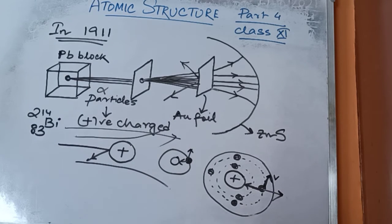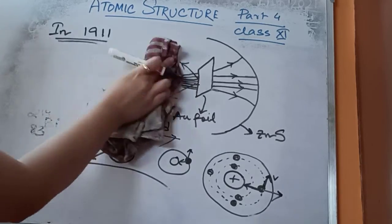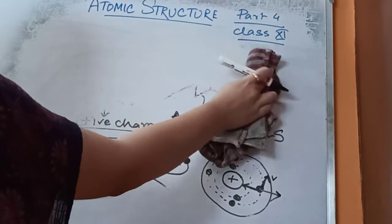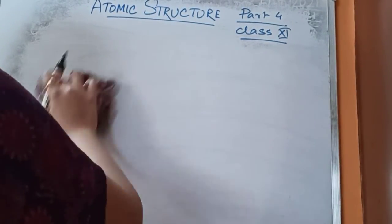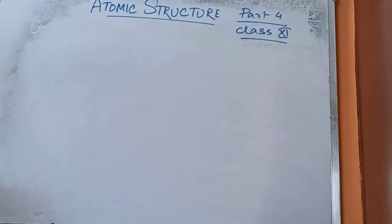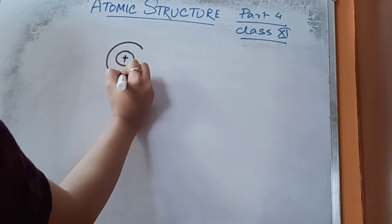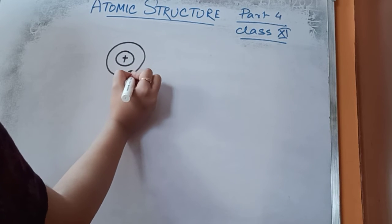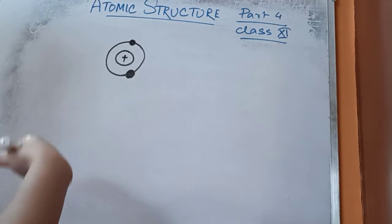This was Rutherford's atomic model — a nucleus at the center with electrons moving in fixed orbits around it. However, Rutherford's atomic model has certain strong limitations. A body in circular motion is continuously gaining acceleration, meaning it is an accelerating body and will not move with constant velocity.